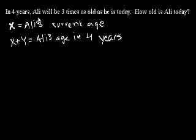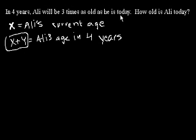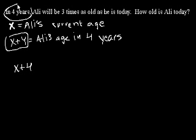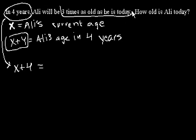Let's read what other information is in the problem. It says in four years — so that's x plus four — Ali will be three times as old as he is today. Today he's x. So we can translate that into: x plus four is going to equal three times as old as he is today.